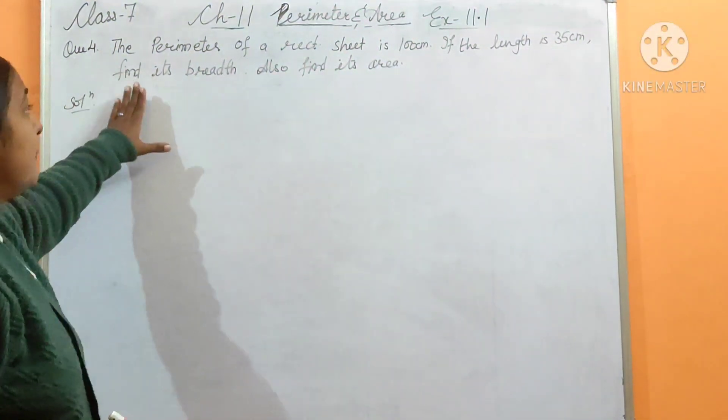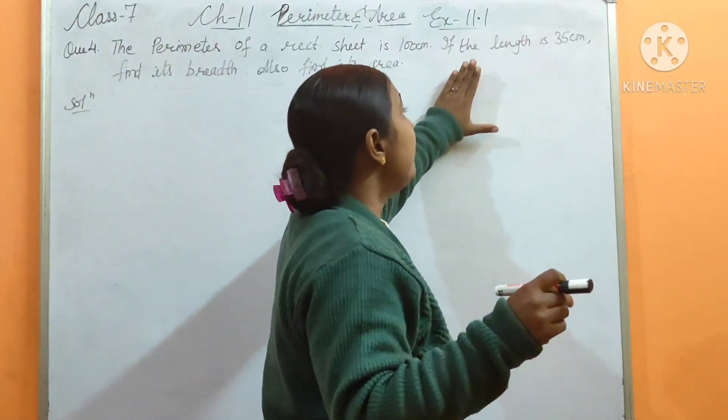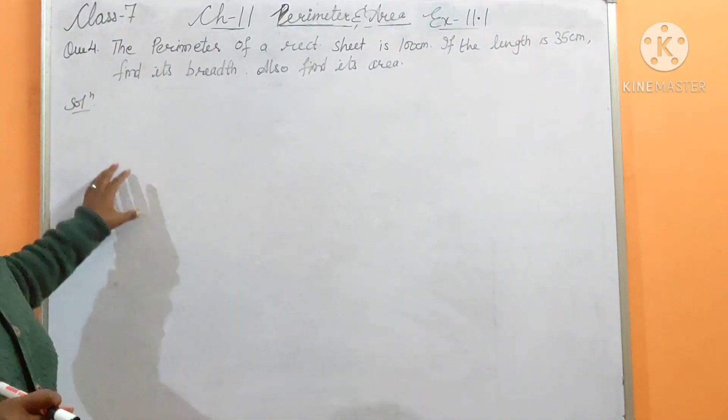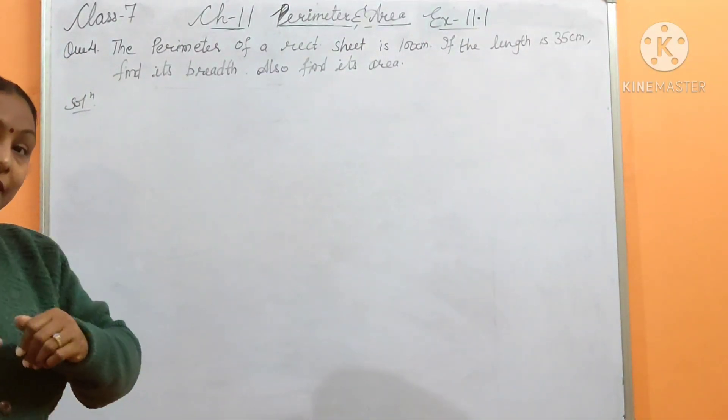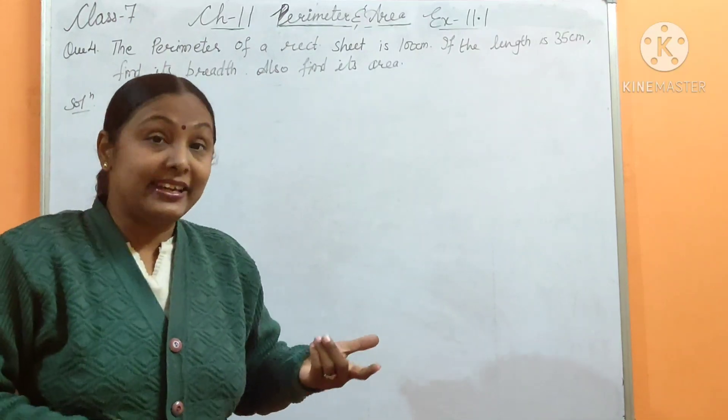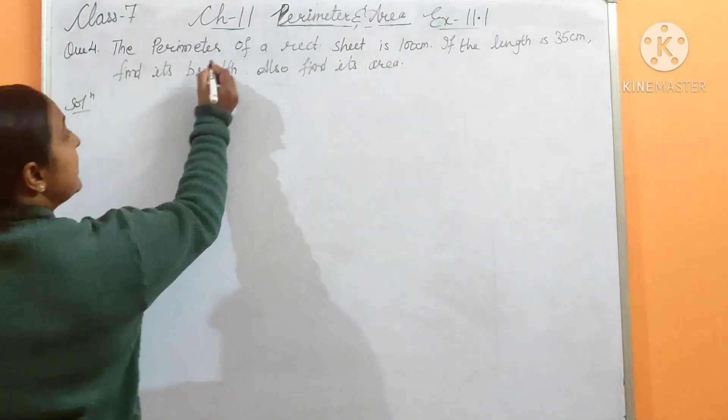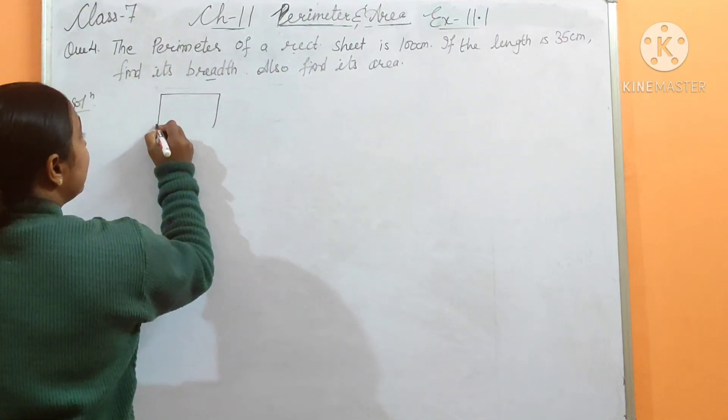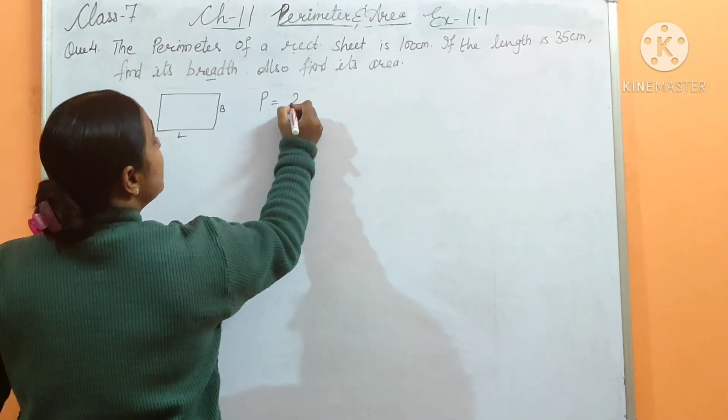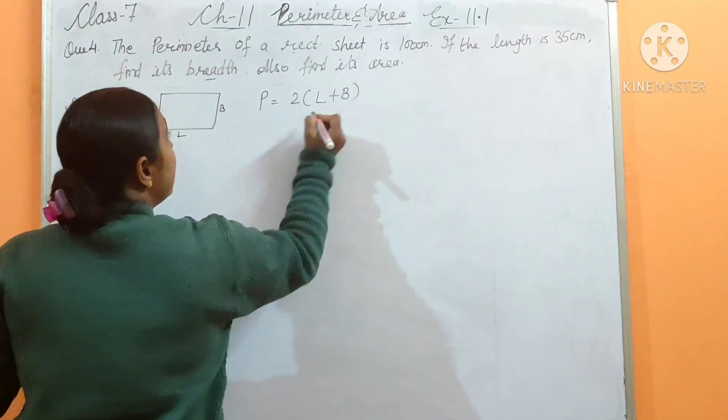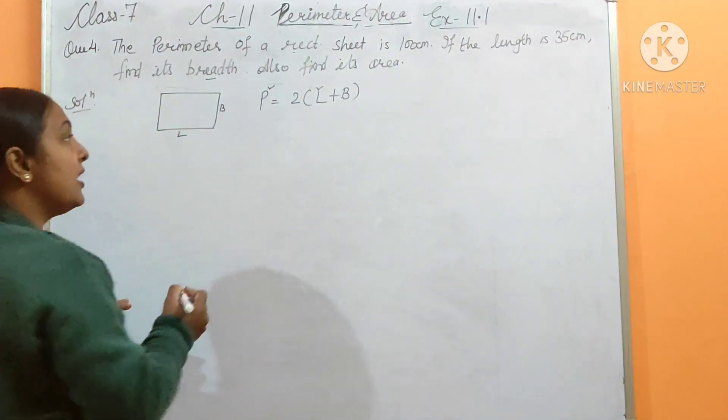Let's come to the fourth question. The perimeter of a rectangular sheet is 100 centimeters. Perimeter is given as 100 centimeters. If the length is 35 centimeters, find its breadth and also find its area. When breadth needs to be found and length is given, then area can also be found because area formula is length into breadth. First we find breadth. We have a rectangular sheet with length L and breadth B. Perimeter is 2(L + B). I need to find breadth - this is given, this is given, so B equals P by 2 minus L. This is my formula for finding B.